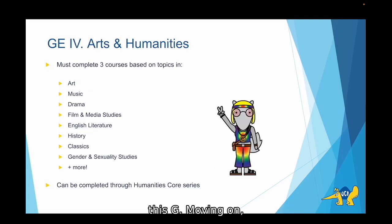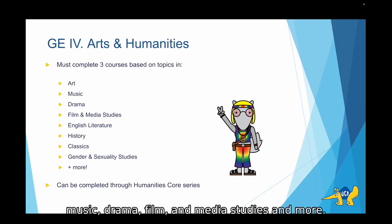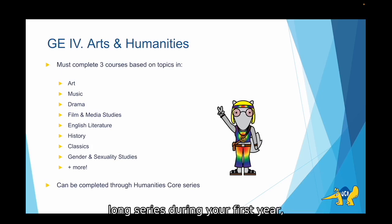Moving on, we have GE 4, Arts and Humanities. This category will require you to complete three courses in topics such as art, music, drama, film and media studies, and more. This requirement can also be completed through the Humanities Core series, so if you decide to take that year-long series during your first year, it will cover this GE as well.